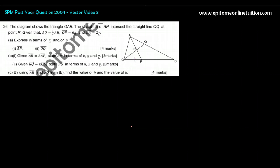So OP is 6X, let's put that here. And OA is 2Y, put your arrow and label 2Y. And AQ is 1/4 AB, that means this is 1 and this is 3.